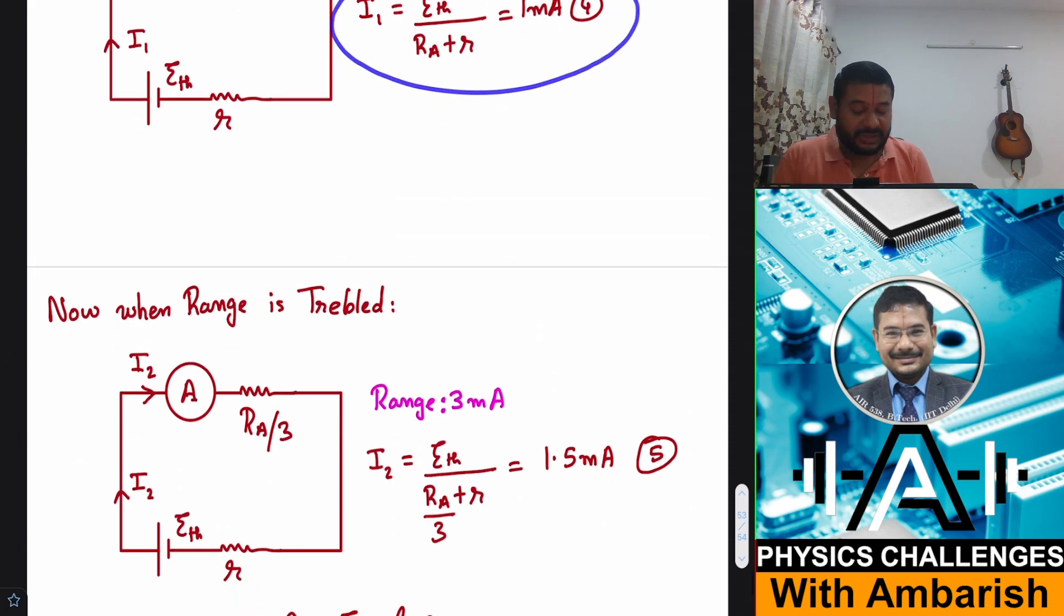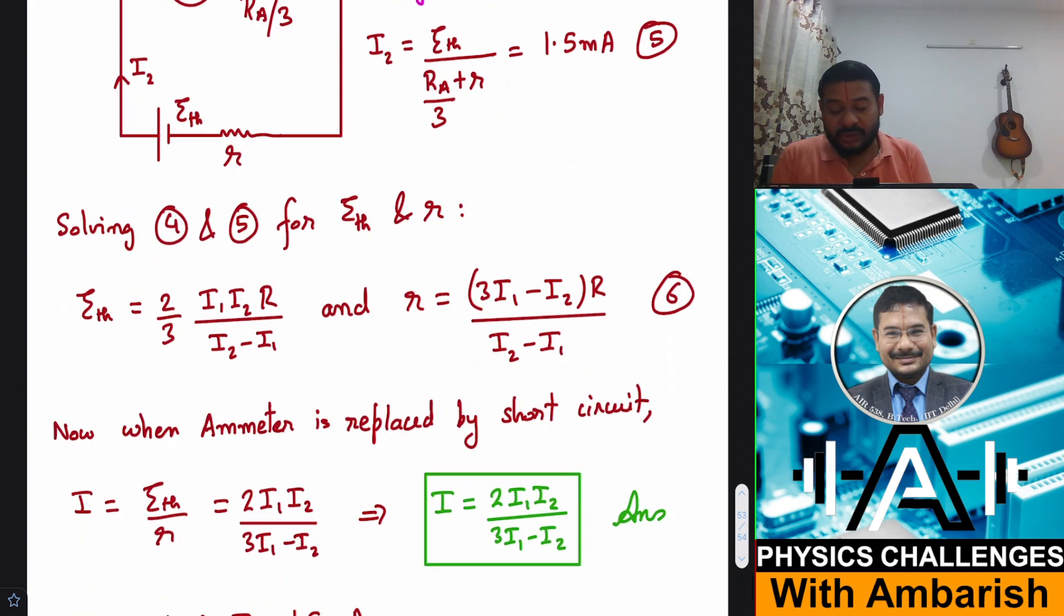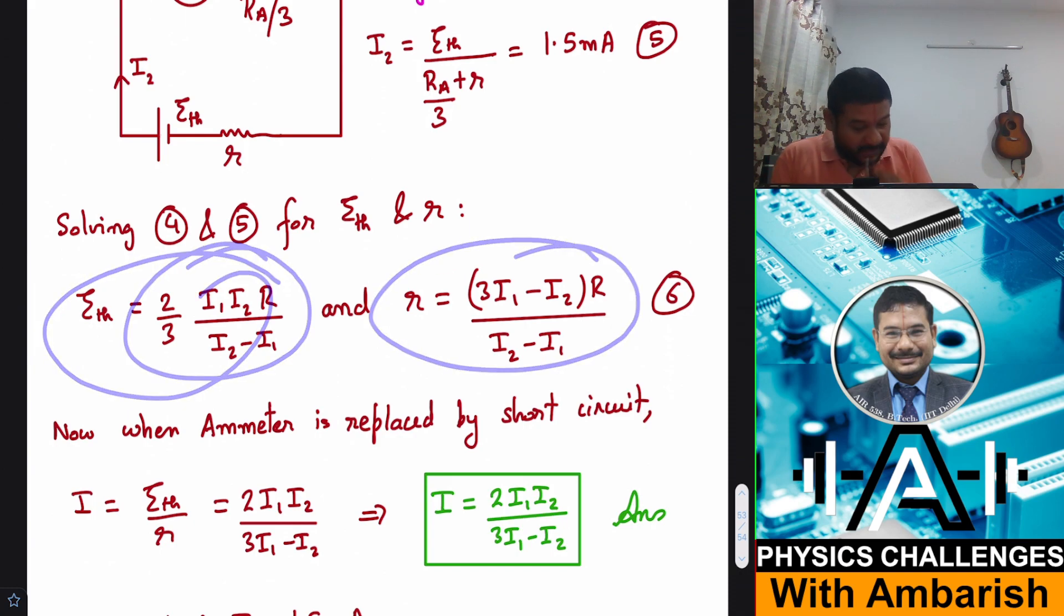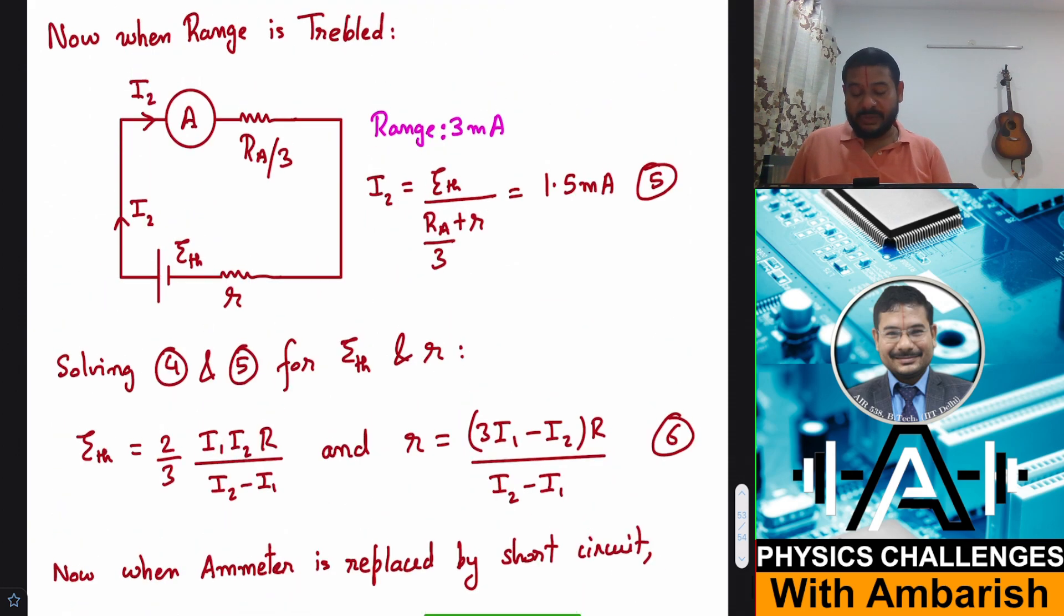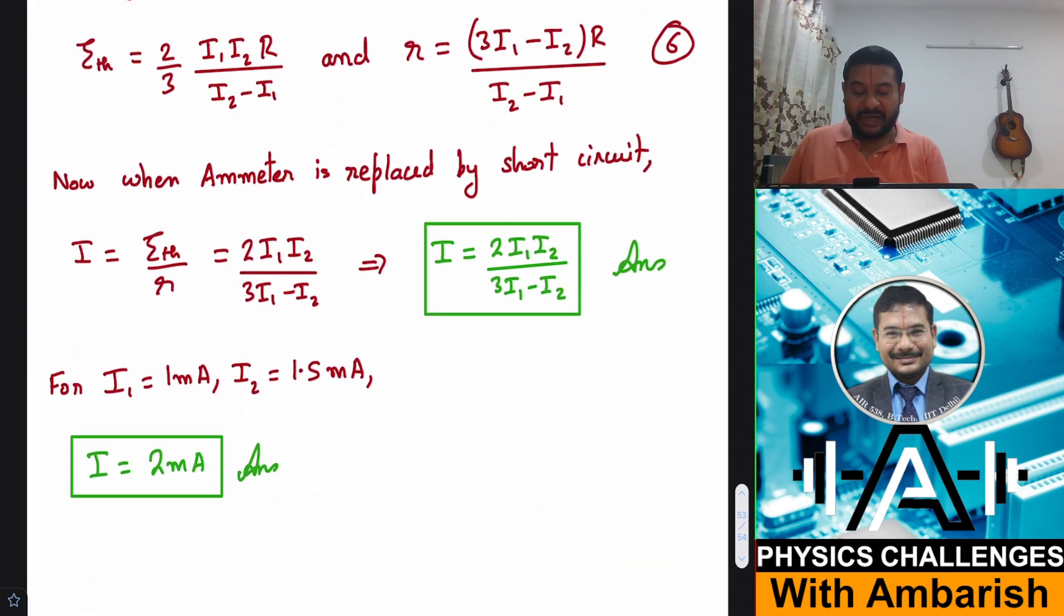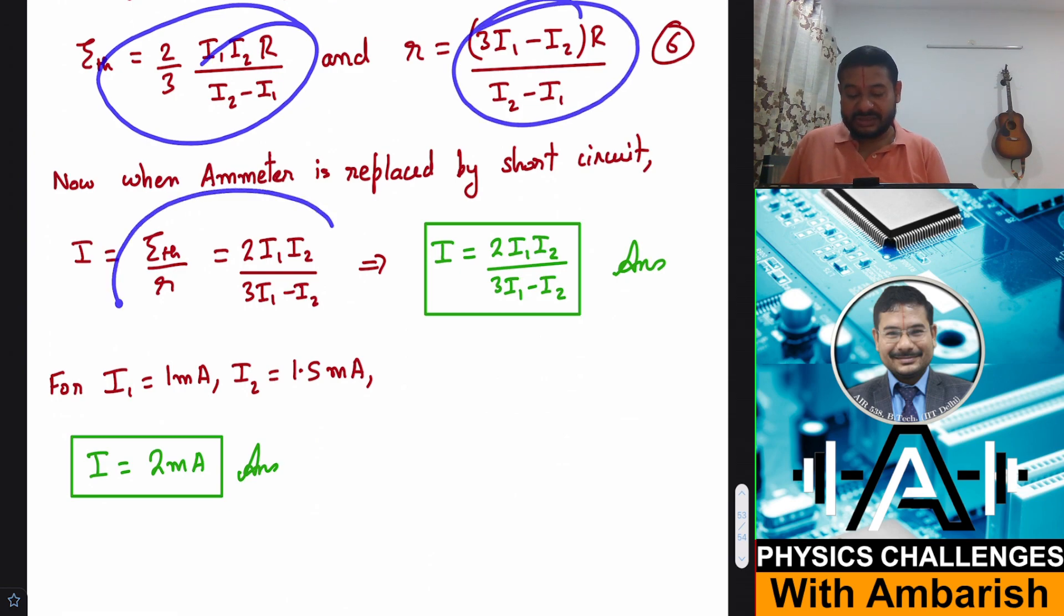So now if you consider equation 4 and 5, they are simultaneous equations in E_R and R Thevenin. We can solve for E_R and R Thevenin. If you do that you get this as E_R and you get this as R Thevenin. Once you know E_R and R Thevenin you can simply calculate the current. If you replace the ammeter by short circuit the current in the original circuit is simply E_R by R Thevenin.